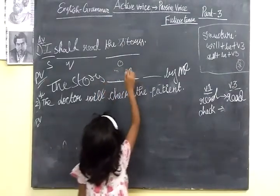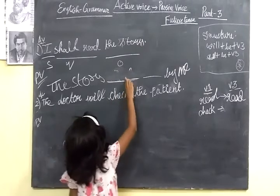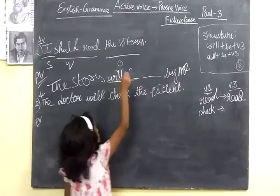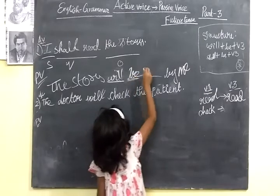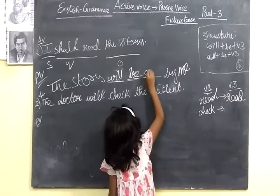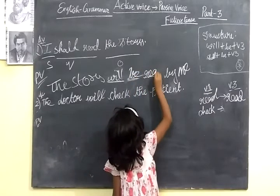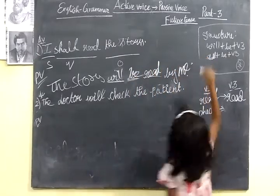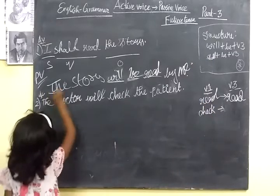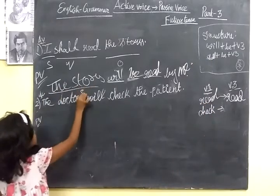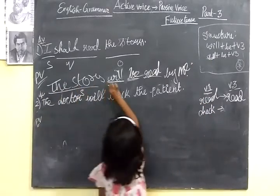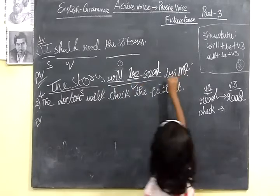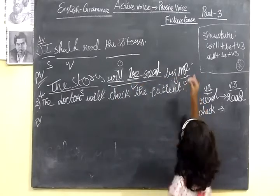This is the third form. For the passive voice, we should use 'will be read.' So the passive becomes: 'A story will be read by me.' In this, 'the story' is now the subject, and 'me' is the object.